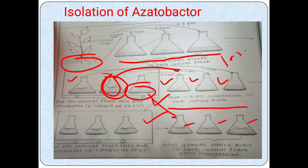To summarize the procedure: first, collect 0.5 or 1 gram of rhizospheric soil from the cereal crop. Second, transfer that soil sample into each of three conical flasks already containing 100 ml of Jensen broth liquid media. Third, transfer those three conical flasks into the BOD incubator for six to seven days.